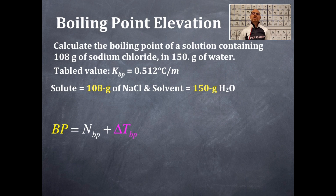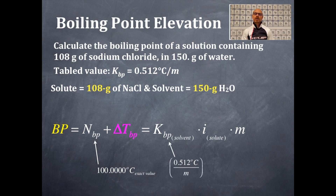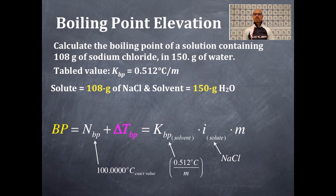The boiling point equals the normal boiling point plus the change in temperature of the boiling point. The change in temperature equals the constant for the boiling point times the Van't Hoff factor times the molality. The normal boiling point for water is 100 degrees Celsius exactly. The constant is 0.512 degrees Celsius per molal. For sodium chloride, there is one cation and one anion, so adding them gives a Van't Hoff factor of two. Now I need to solve for the molality: moles of sodium chloride divided by kilograms of water.